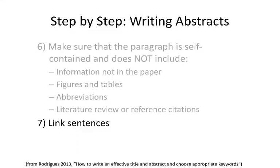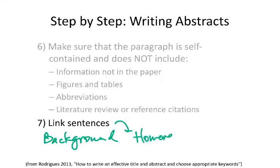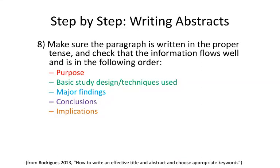Make sure you link your sentences appropriately. An example of a linker: if you're setting up the background, a word like 'however' can connect it — for example, 'this has not been studied in my particular system' or 'we still haven't investigated this aspect.' Linking sentences in your abstract makes it flow well and feel cohesive and easier for the reader to follow. Also check the tenses: present tense at the beginning, past tense in the middle for methods, and present tense again at the end for results and conclusions. Make sure it flows well, has linker words, and follows the order: purpose, methods, results, conclusions, and implications.